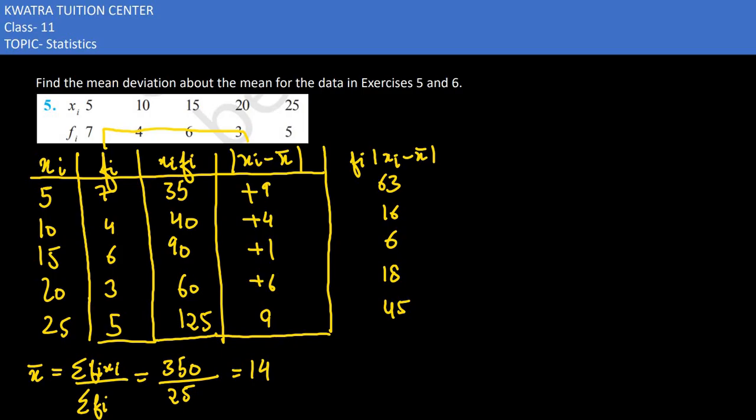Now what do we need to do? We need to take summation of this value so we can get mean deviation. So adding up all these you would get 158. Then I would be finding the mean deviation which is summation of f_i |x_i minus x̄| divided by observations. How many observations? Summation of f_i is 25.